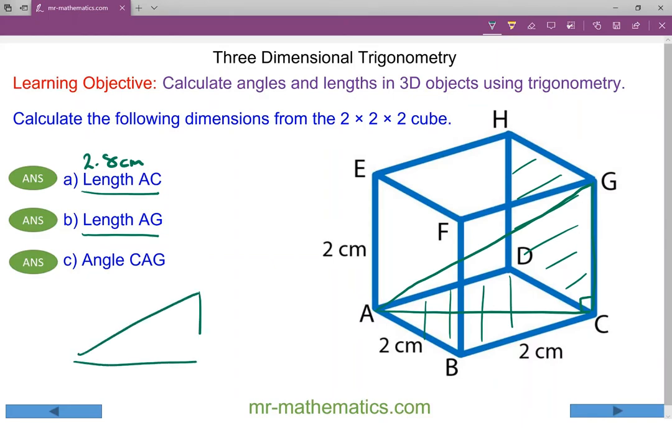The hypotenuse is AG, the base is AC, and the vertical is CG. Now we've already worked out AC as approximately 2.8 centimeters and we know GC is the same as AE which is two centimeters.